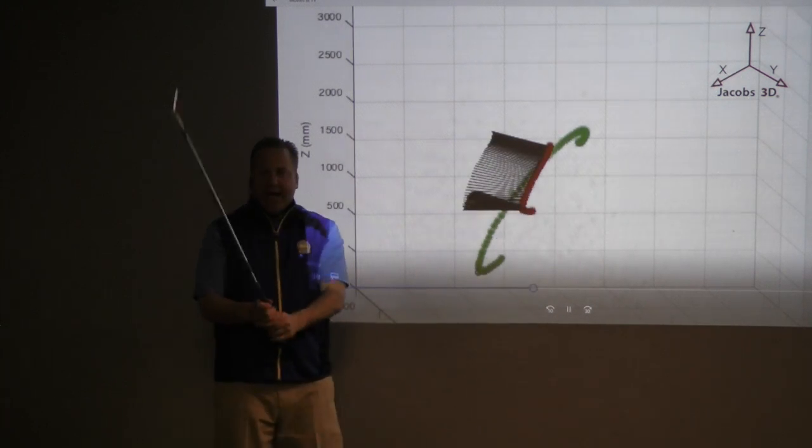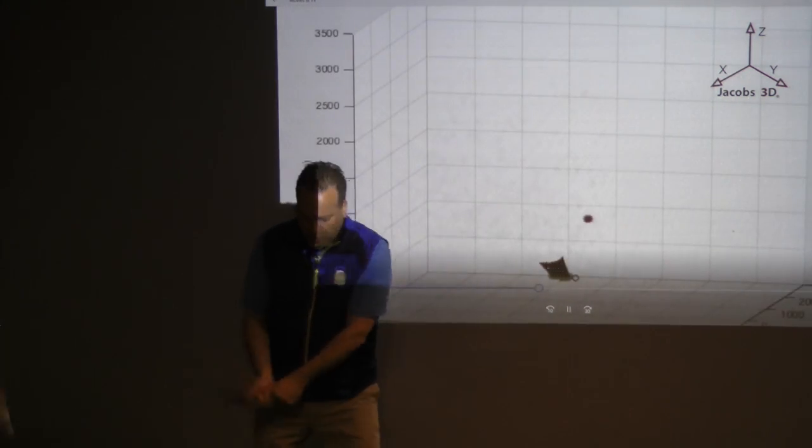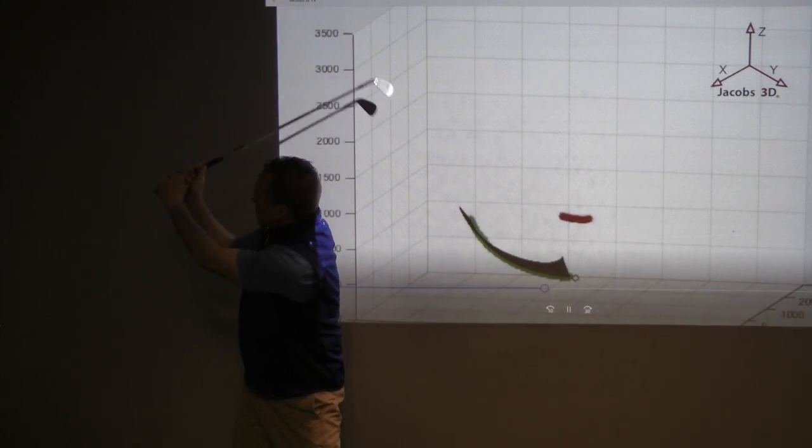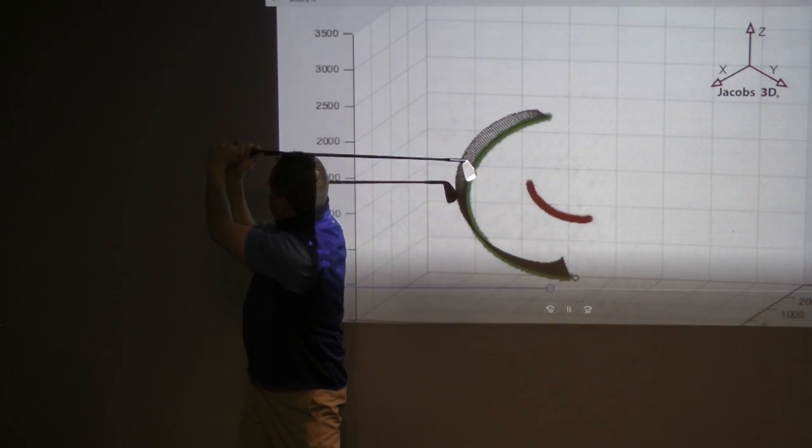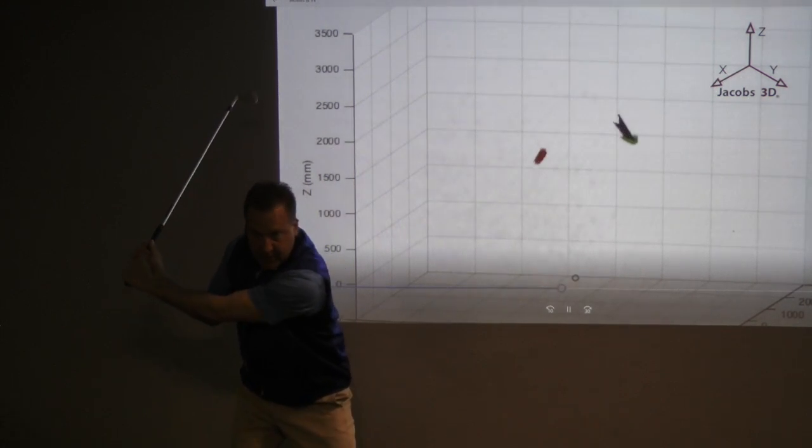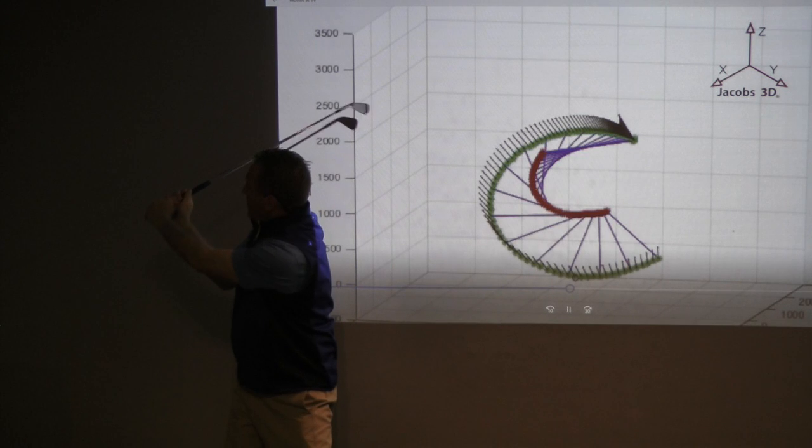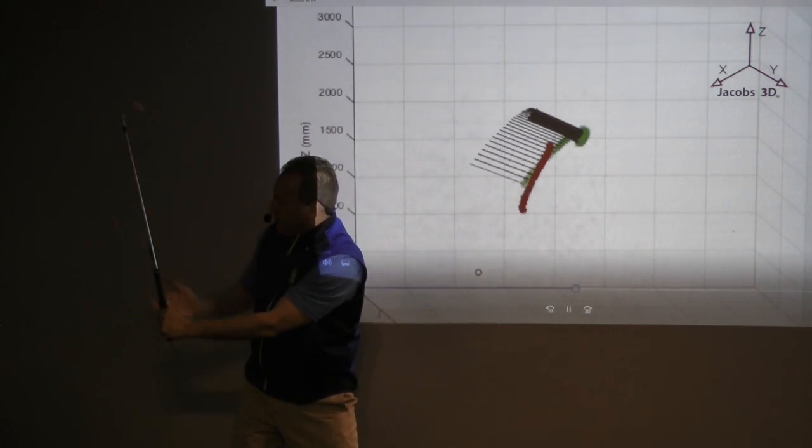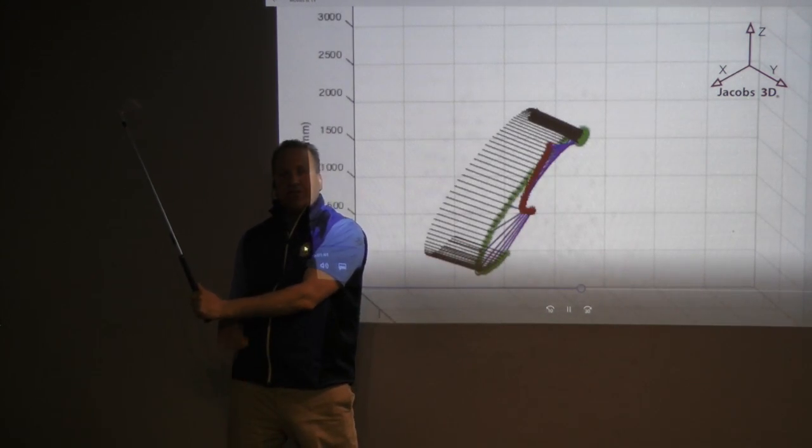I think a good way to look at it is when the club is on this side of your hands, which it hopefully is at the start of the downswing and early into the downswing. And then there will come a point where it then lines up with your hands. And that's really the magic spot.